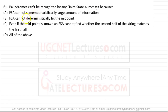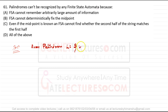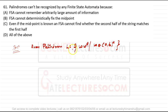Palindrome strings include even palindromes of the form W·W^R, where the first half is a string and the second half is its reverse, and odd palindromes with a center point. For example, strings formed using {a, b}. These languages cannot be accepted by a finite state machine — meaning DFA or NFA — because to accept them, you must remember the first half of the string in order to verify the second half.